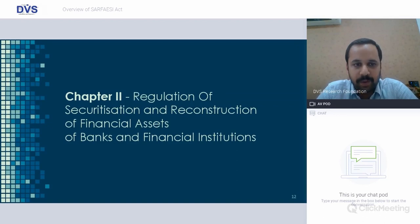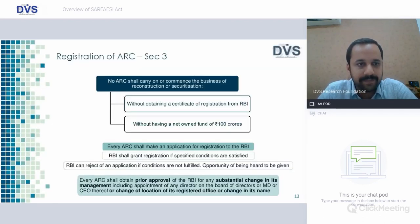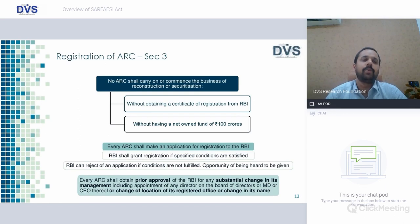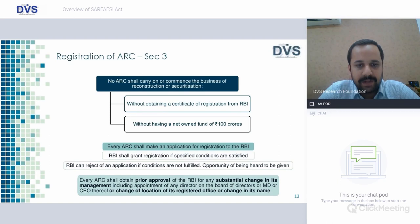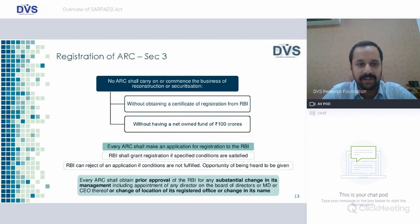Chapter 2 discusses regulation of securitization and reconstruction. Section 3 speaks about registration of ARC — the rules required for registration of any ARC to be floated. ARC shall not carry on or commence the business of reconstruction or securitization without obtaining a certificate of registration from RBI and without having a net worth of 100 crores. Every ARC shall make an application for registration to RBI, and RBI shall grant registration if specific conditions are satisfied.